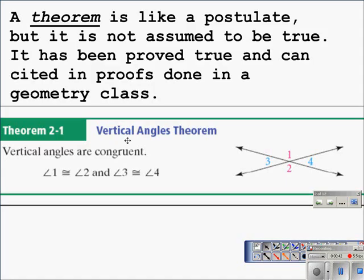Here we see the vertical angles theorem, which states vertical angles are congruent. For the diagram here, we have two intersecting lines forming two pairs of vertical angles. We have angle 1 and angle 2 being vertical and angle 3 and angle 4 being vertical. By the vertical angle theorem then, angle 1 is congruent to angle 2 and angle 3 is congruent to angle 4.